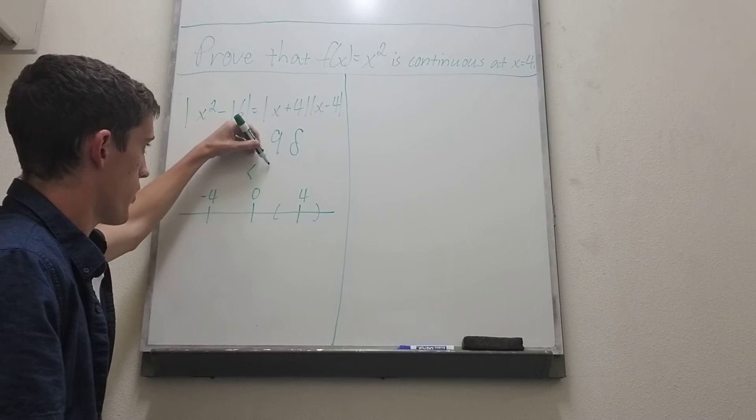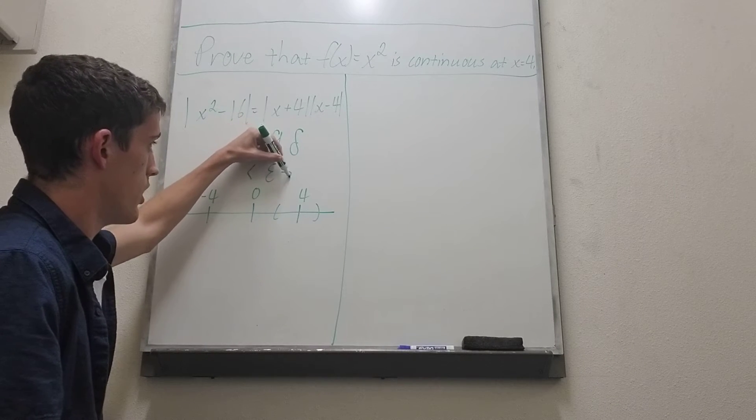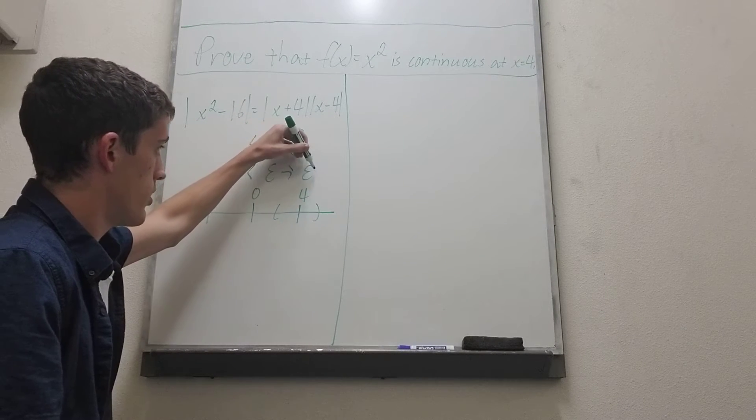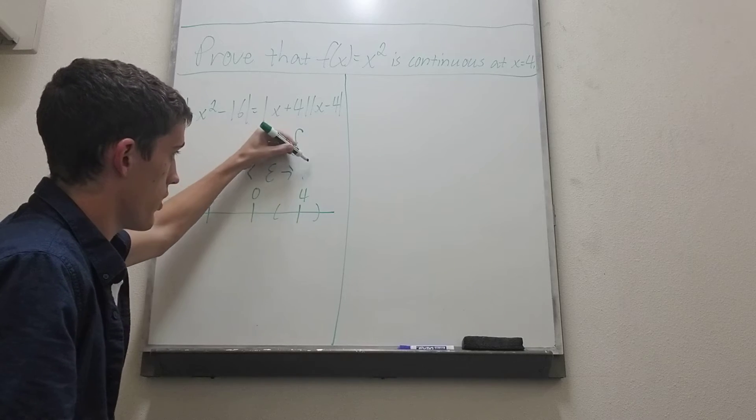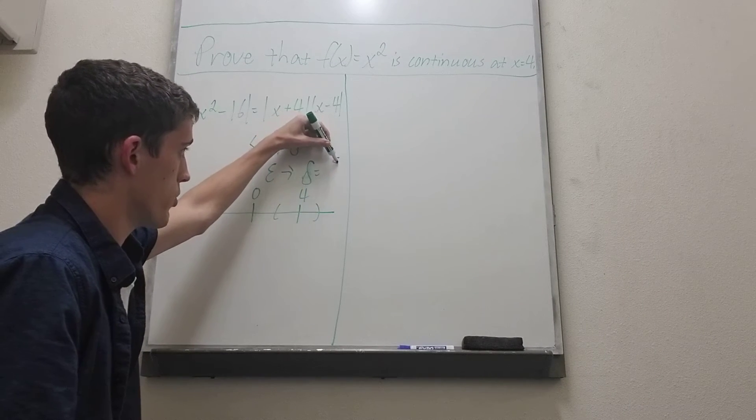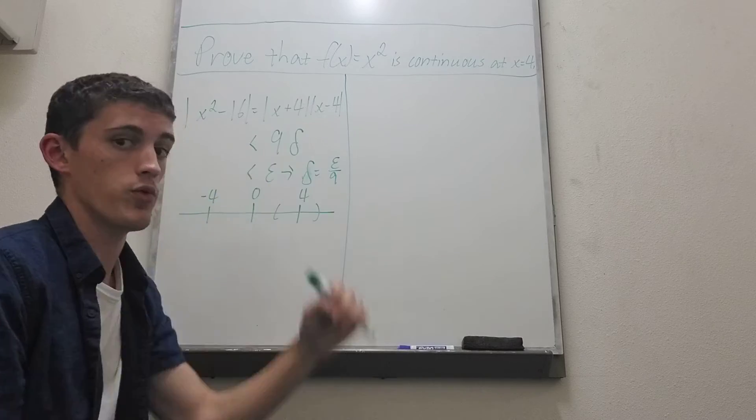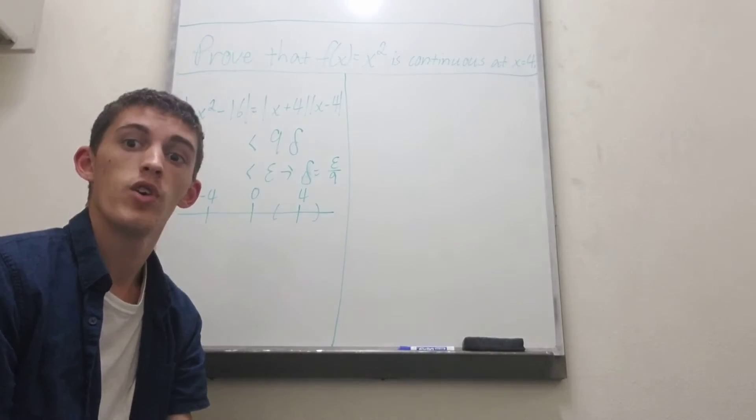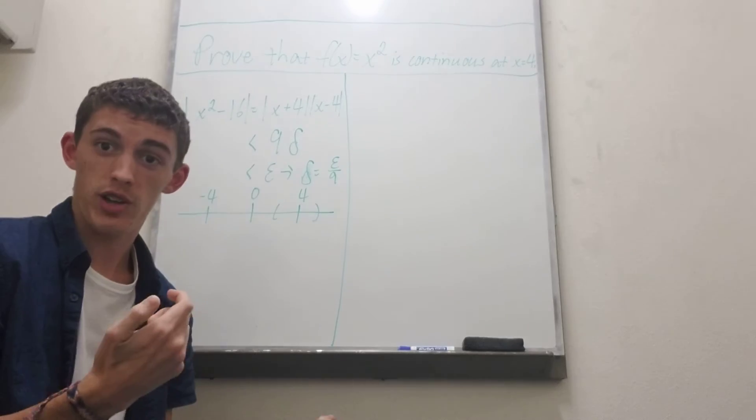And if we suppose that this is less than epsilon then we figure out that our delta needs to be equal to epsilon over 9. Okay so that's our scratch work.